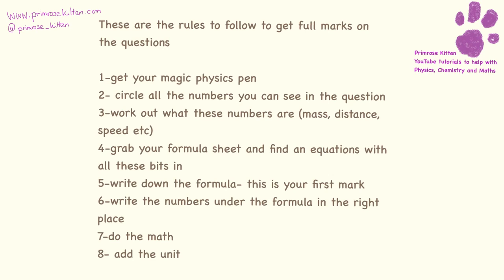First of all get your magic physics pen. Now my students laugh at me but this is what I call it. So get a coloured pen, get a highlighter, get a different coloured pen to the one you are writing in. Circle all of the numbers that you can see in the question. Use the units to work out what these numbers mean. Get your formula sheet, find an equation with all of these bits on, write down the formula. Now this is generally, unless they give it to you, going to be your first mark. Write the numbers under the formula in the right place, do the maths because that is generally only worth one mark and then add the units.